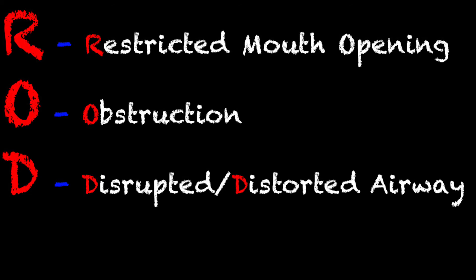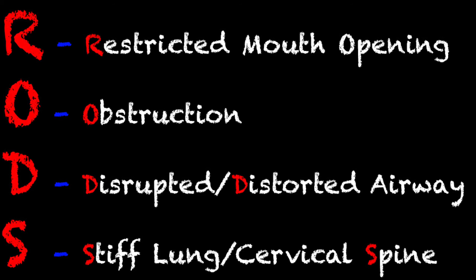The D stands for disrupted or distorted airway. So have they experienced some kind of trauma that has changed the normal anatomical airway for the patient? And the last one, S, stands for stiff lung or cervical spine. Stiff lung refers to poor lung compliance, or someone who has had lung disease like COPD that has put them in pulmonary compromise — that can play a factor in placing these devices. And also the cervical spine: if the patient has a stiff neck, an arthritic neck, or possibly even a C-collar on, all of that can get in the way and cause issues.